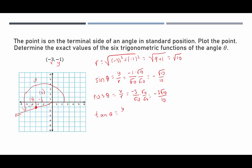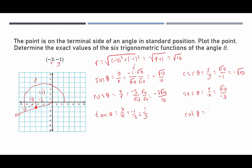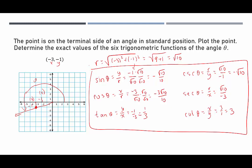Sine of theta is y over r = -1 over √10. Rationalizing gives -√10 over 10. Cosine of theta is x over r = -3 over √10, which rationalizes to -3√10 over 10. Tangent of theta is y over x = -1 over -3 = 1/3 (positive, as expected). Cosecant is r over y = √10 over -1 = -√10. Secant is r over x = √10 over -3. Cotangent is x over y = -3 over -1 = 3. This demonstrates evaluating trigonometric functions at any angle.